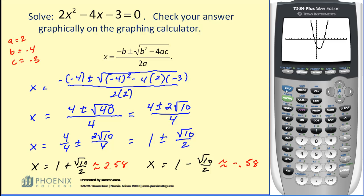If I hit second trace, it brings up the calculation menu, and I can find the zero, and I can find one of the zeros. It's going to ask me to go to the left side of one of the zeros. Let's verify the one on the right. I'm on the left side. I'm going to hit enter and move to the right side of that zero, hit enter, and then enter again.